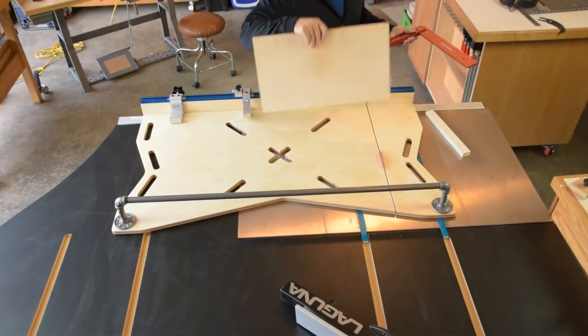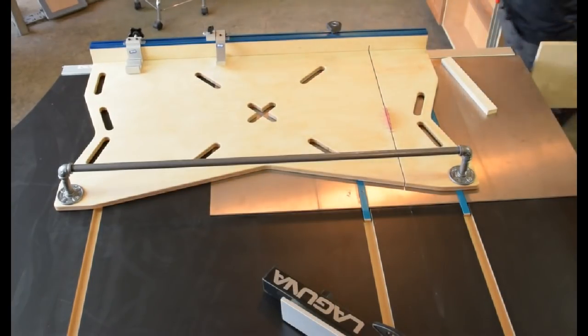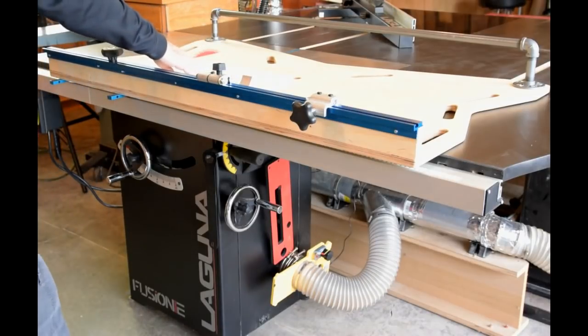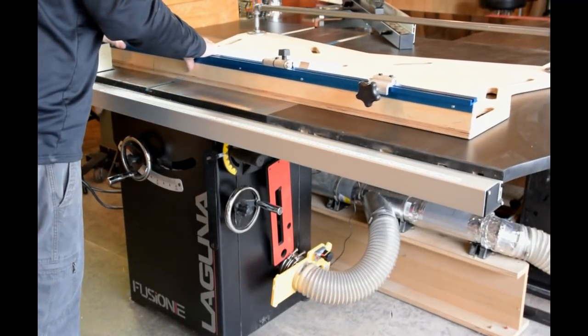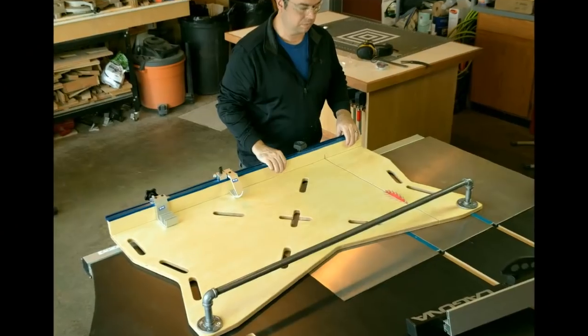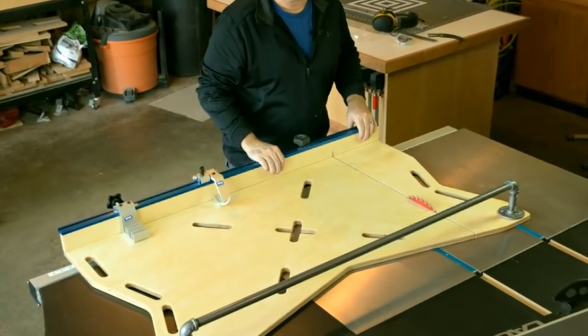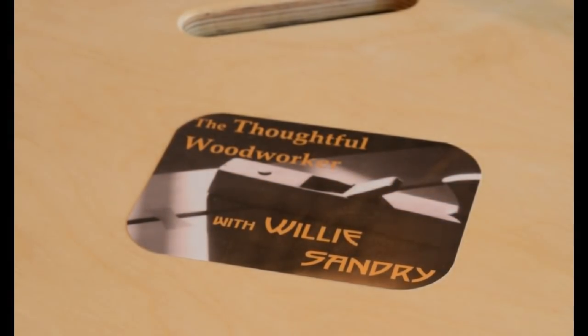That's the X-cut sled folks, make one for your F2. For all the dimensions and the rest of the details you need to build this X-cut sled, head over to my channel, The Thoughtful Woodworker.